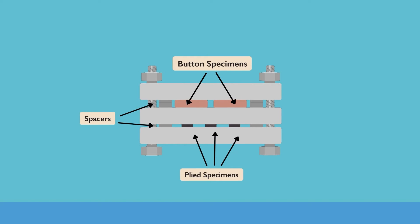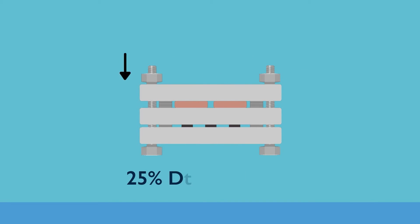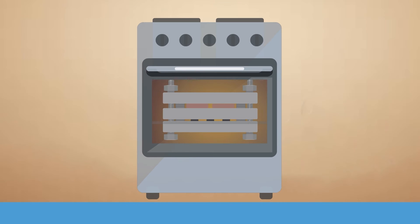The test method involves the application of a 25% deflection, compressing the sample to 25% of its original size to button specimens secured in a jig apparatus. This force is applied for a given time at a set temperature.